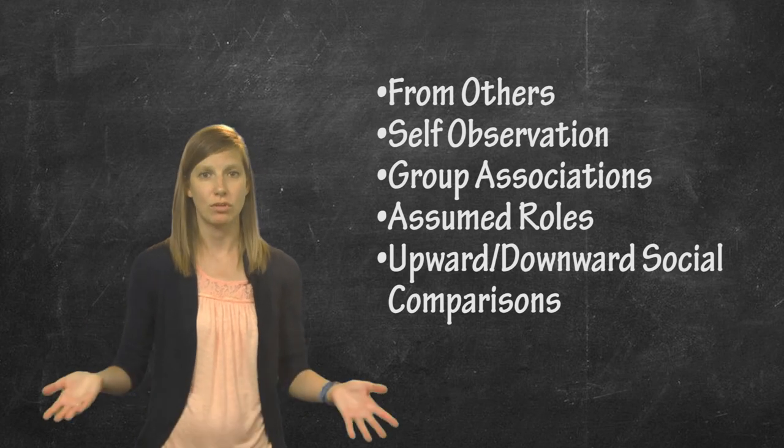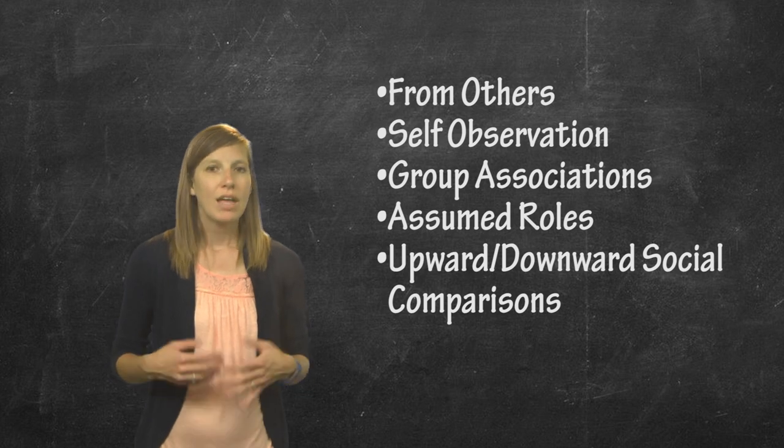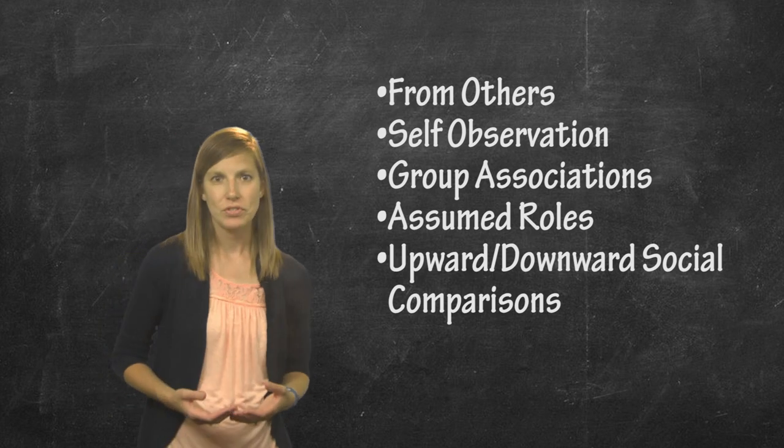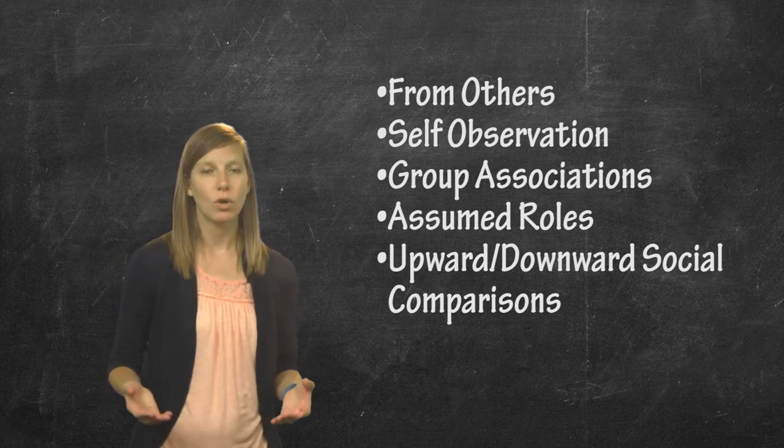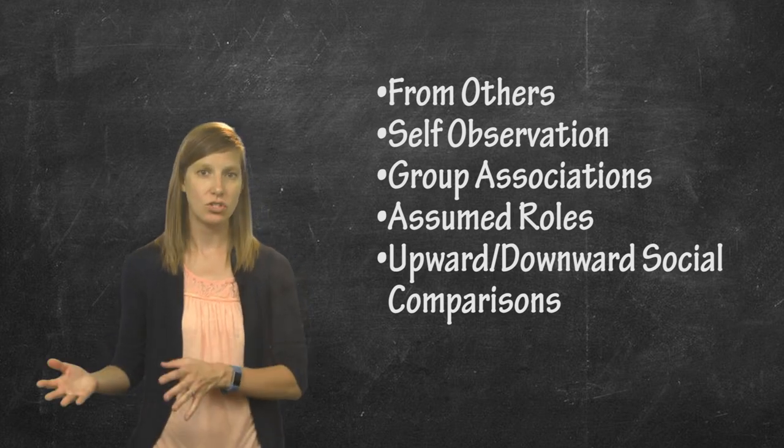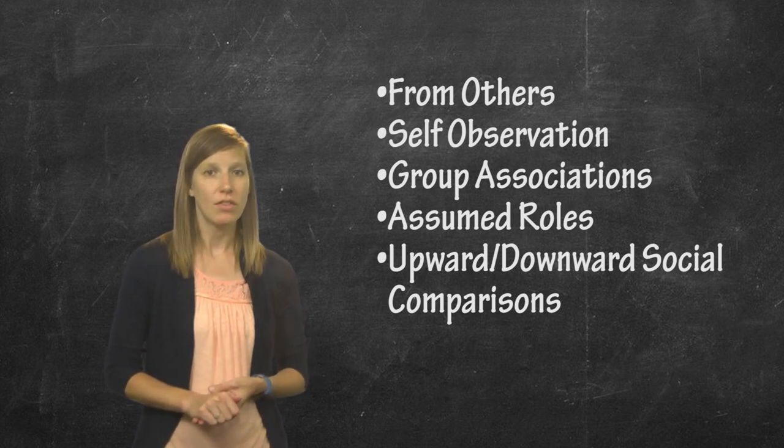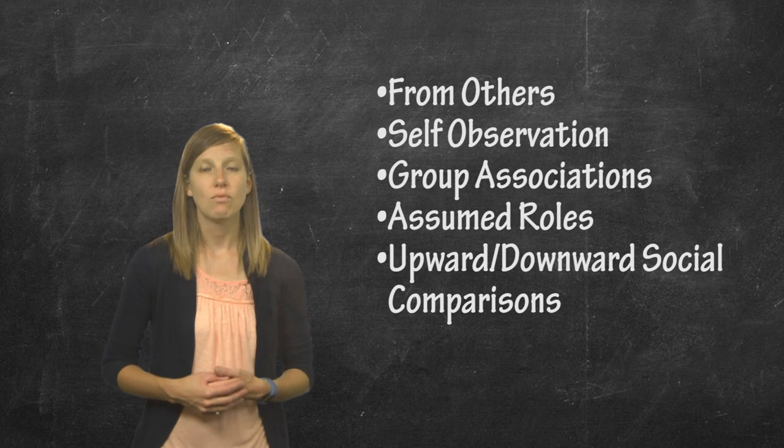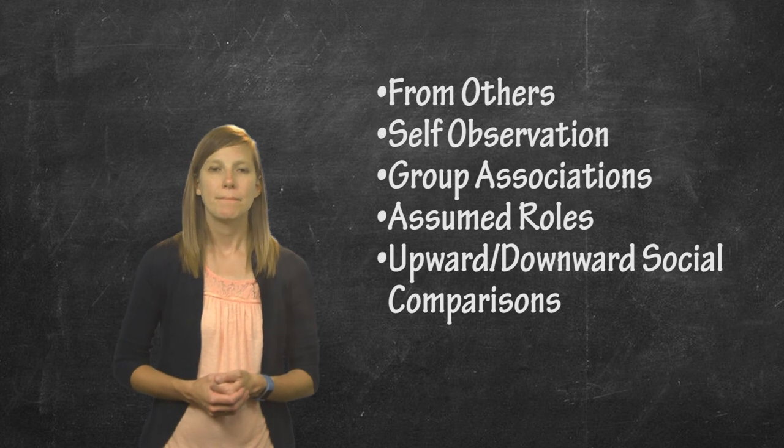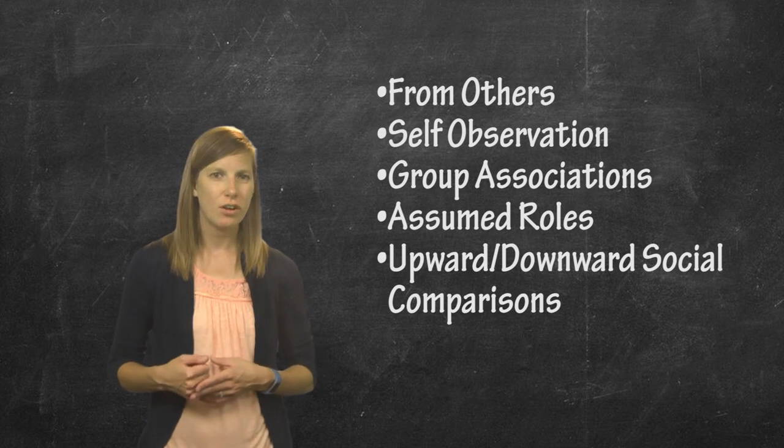And then we have assumed roles. So these are just roles that you are assumed into. For example, I am a wife—that's a role I assumed when I got married. I am a mother to two children—that is a role I assumed when I had my children. I am an owner and mother to a cat, Lily—so that is a role that I assumed when I adopted Lily. So these are just roles. They're not necessarily roles you choose; they're kind of roles that are given to you, but I've heard students make the argument before that, well, you chose to get a cat, so you chose to be in that role.